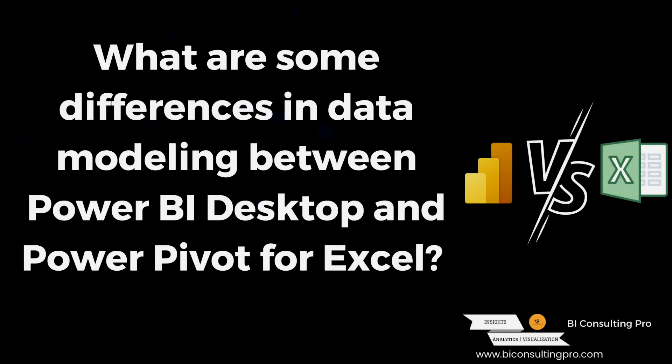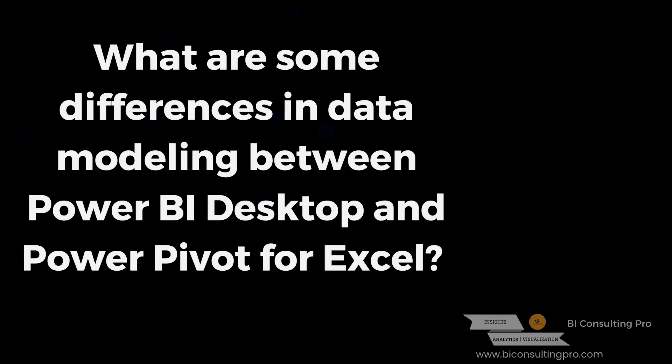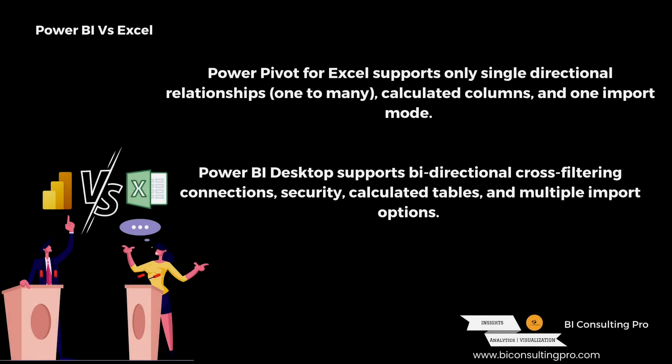Next: what are some differences in data modeling between Power BI Desktop and Power Pivot for Excel? Power Pivot for Excel supports only single-directional relationships — that means one-to-many — calculated columns, and one import mode only. However, Microsoft Power BI Desktop supports bi-directional cross-filtering connections, security, calculated tables, and multiple import options.